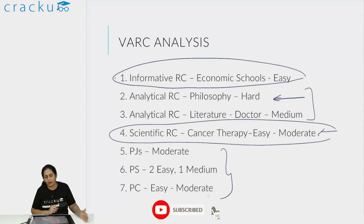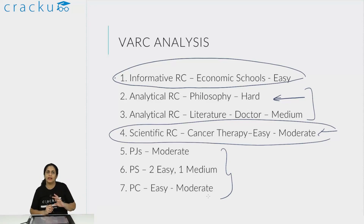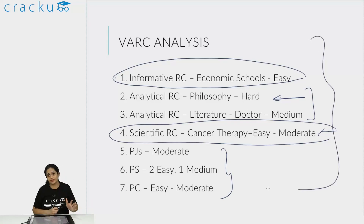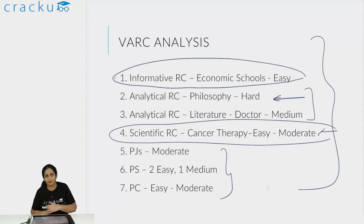The only tricky questions in informative or scientific RCs are ones where the option is slightly distorted and difficult to spot. Generally, the part most aspirants find difficult is the analytical RCs. So those two analytical RCs were on the tougher side, and the other two were on the easier side. The VA part - para jumbles were medium difficulty, one para summary was medium difficulty and two were easy, and para insertion/completion questions were medium difficulty - so overall the VA section was on the easier side.